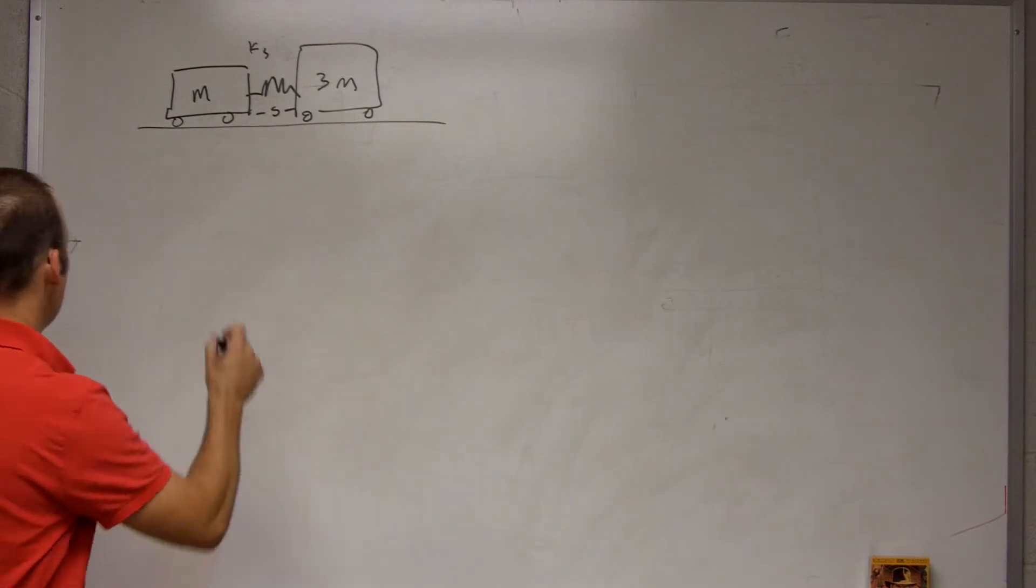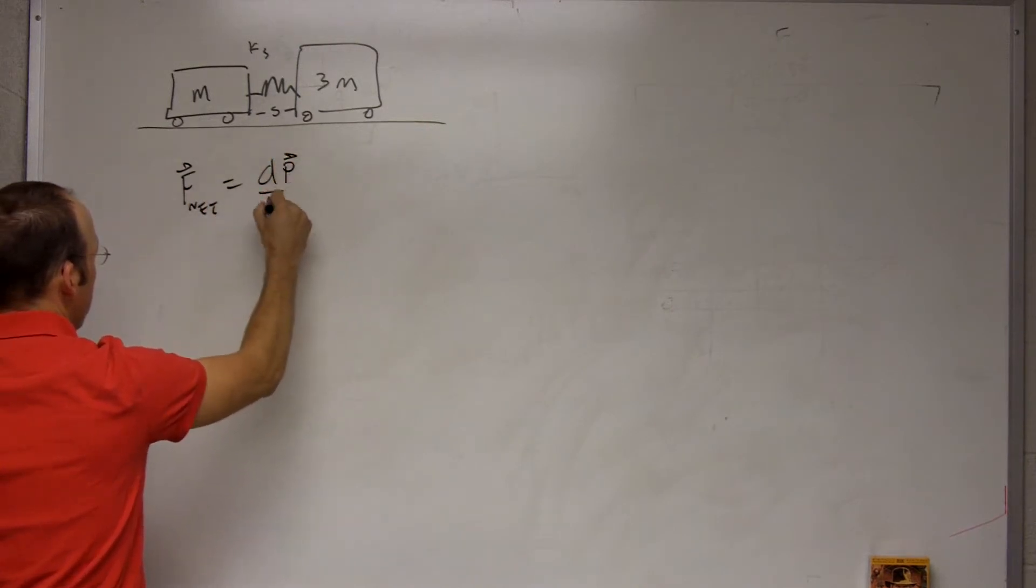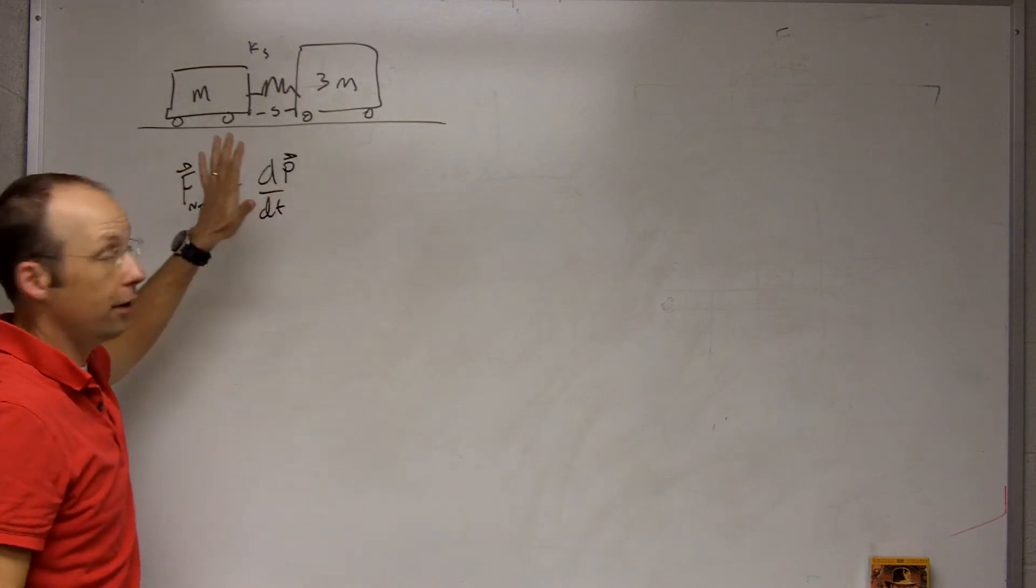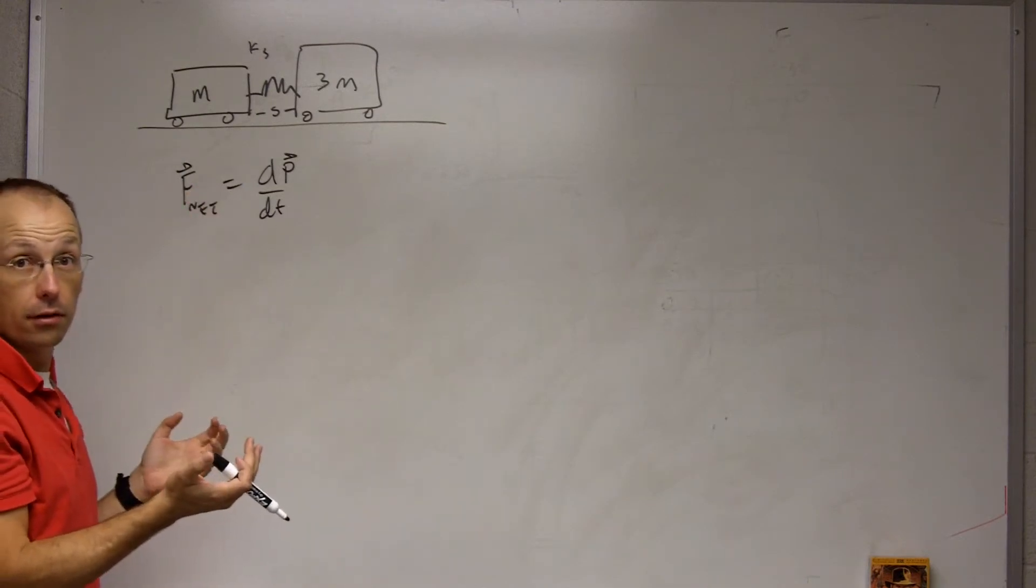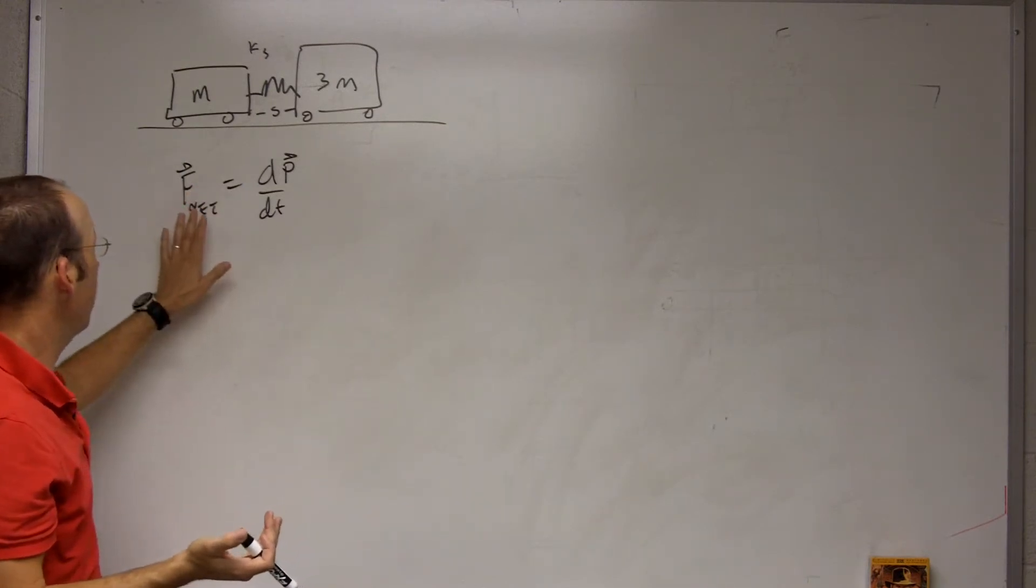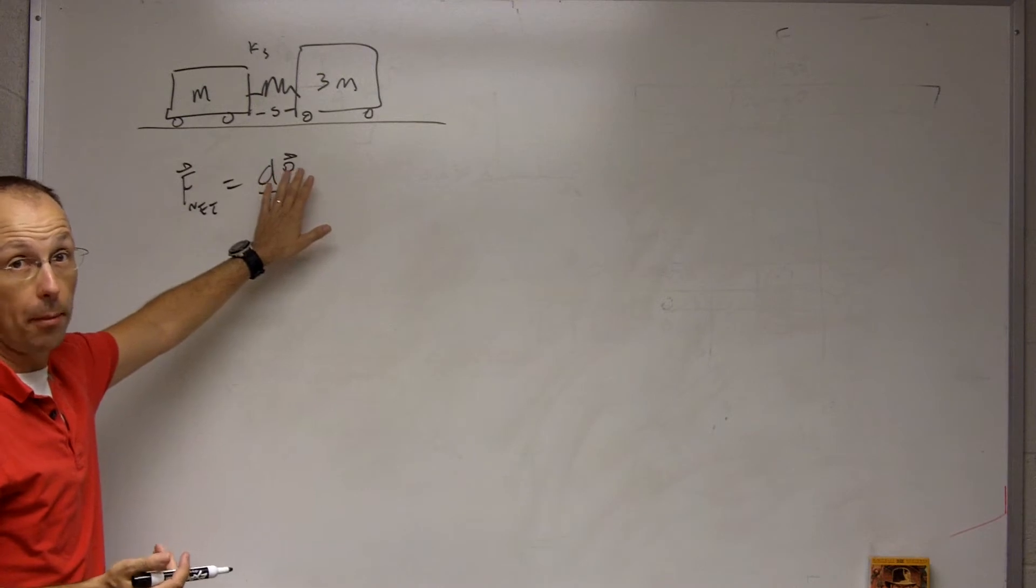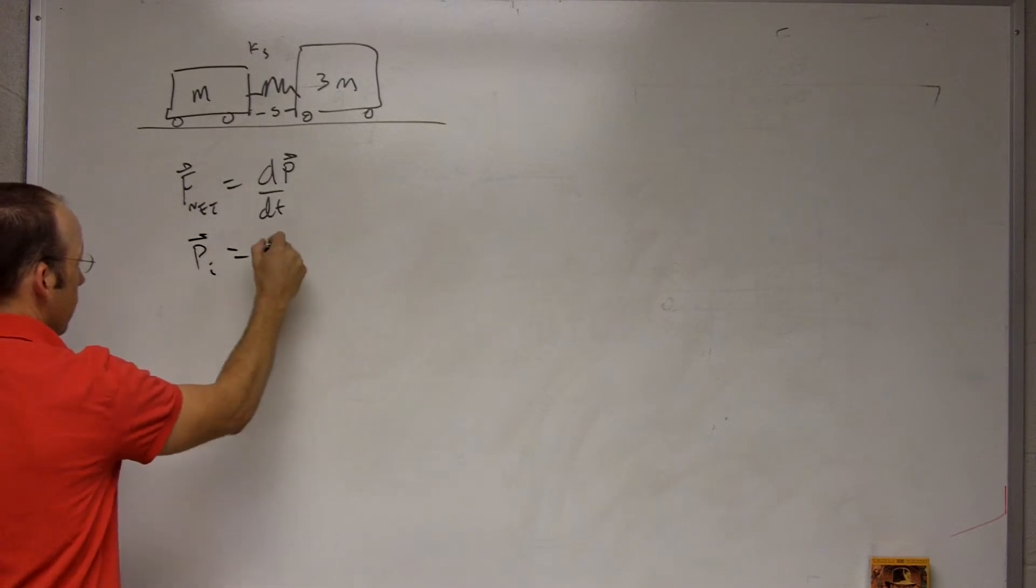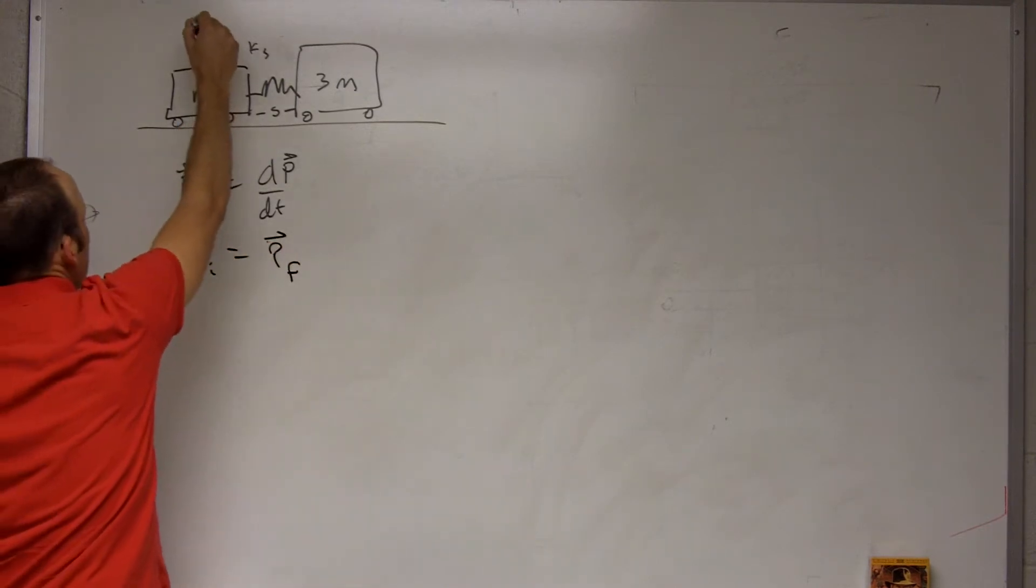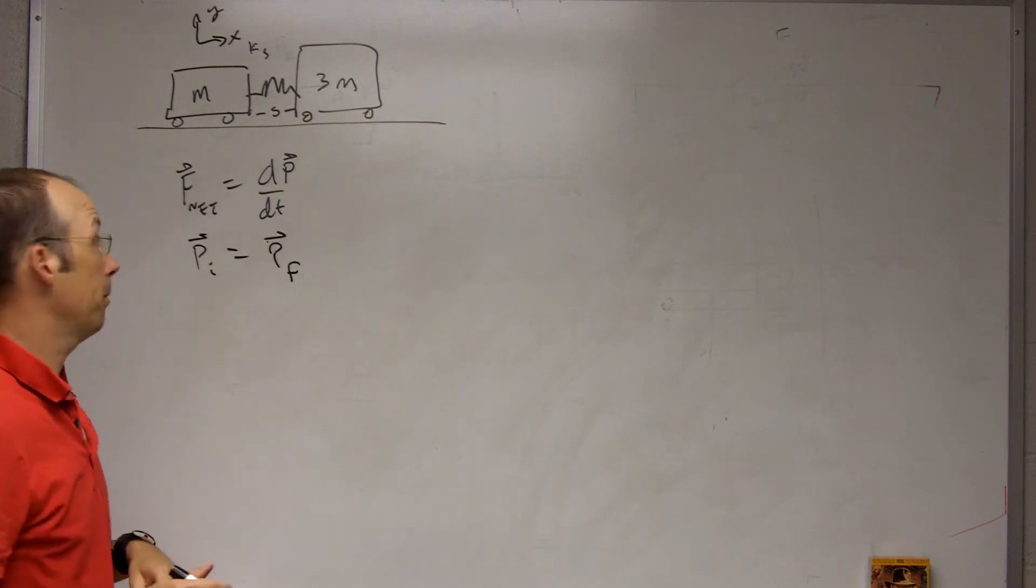The momentum principle says F_net equals dP/dt, and I'm going to take both the carts and the springs as my system. Then I have gravity pulling down on them, and the floor is pushing up, but those add up to zero vector. So F_net is going to be zero for the system. This means that the change in momentum for the system is zero, or that the momentum is constant. So I can say P_initial equals P_final.